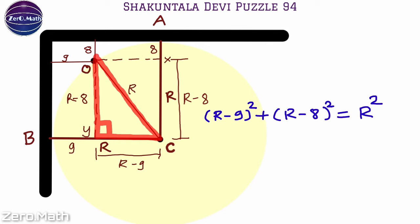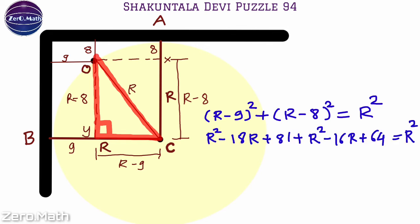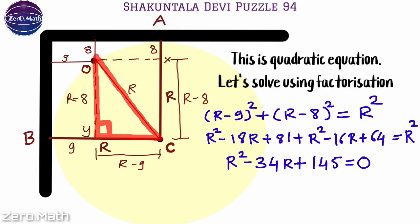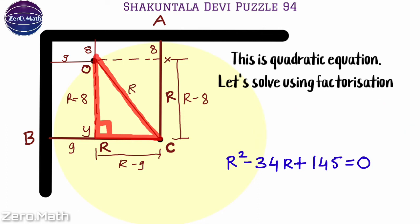Let's expand the equation. We get r² − 18r + 81 + r² − 16r + 64 = r². Canceling r² from both sides, we get r² − 34r + 145 = 0. This is a quadratic equation — let's solve it using the factorization method.